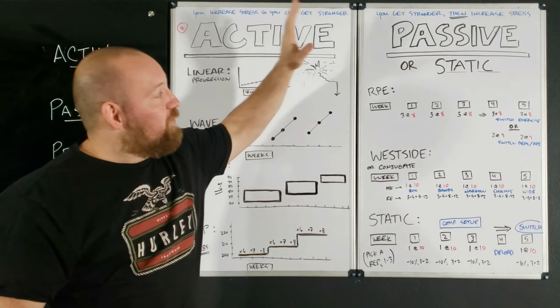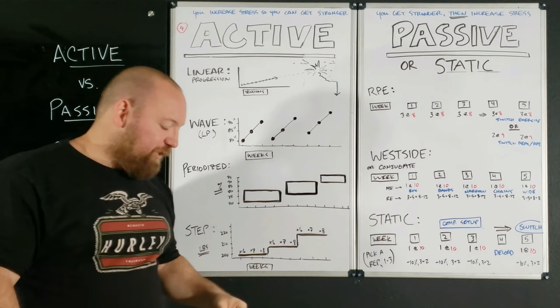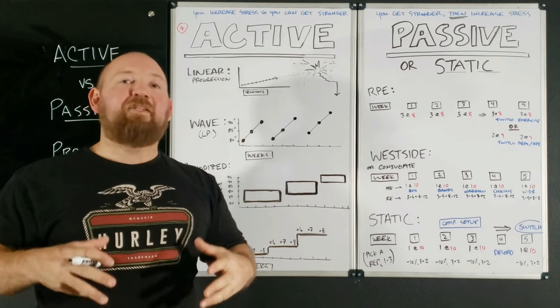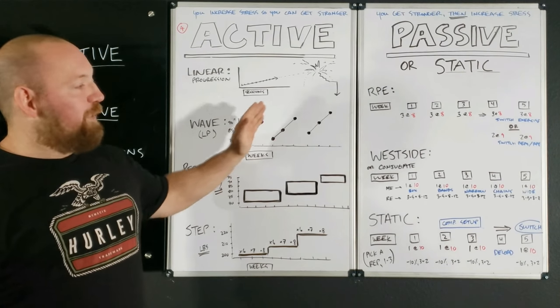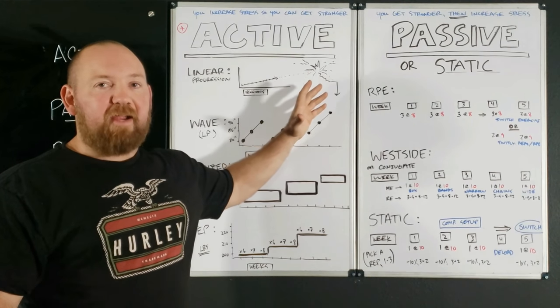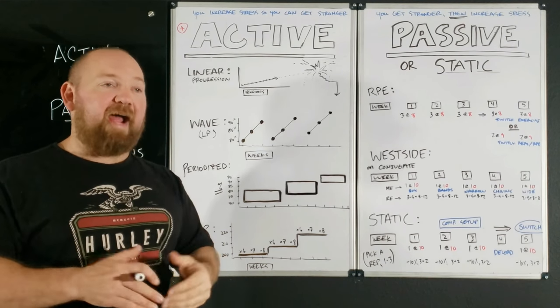So that rant gets us into passive, or as I call them, static progression. That means that everything is essentially staying flat. Static means unchanging. That's what we're talking about. So are these deliberately changed? The program mandates change week to week. These stay back. And usually you're going to see a type of auto-regulation. That's what keeps it back.